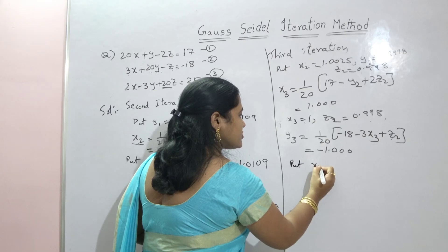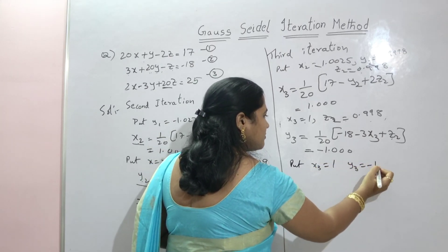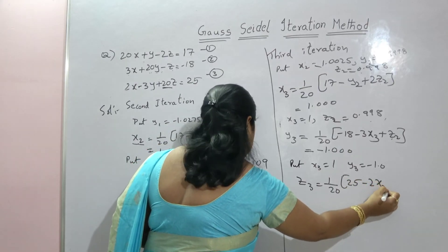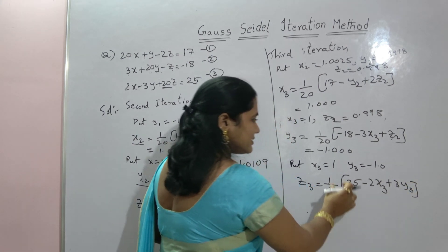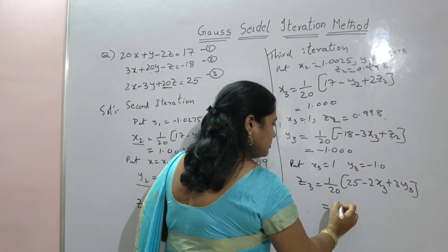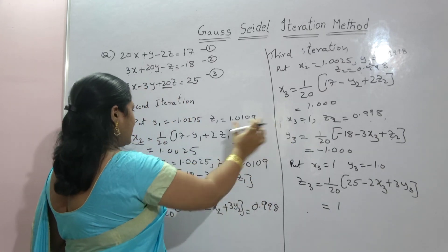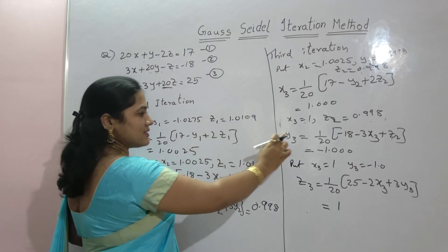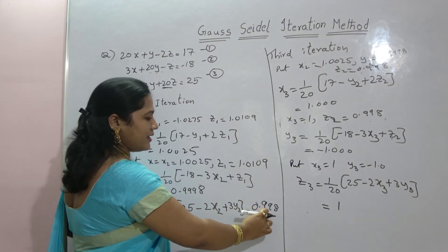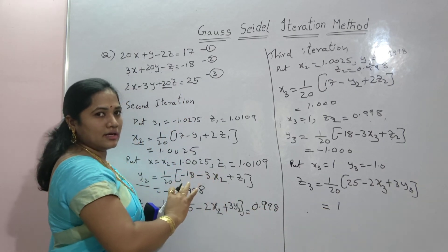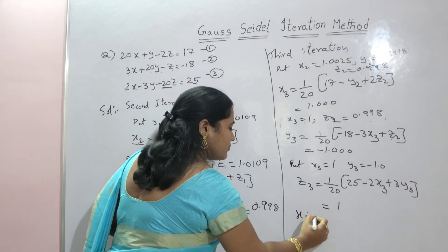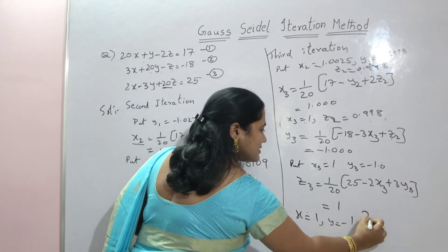For z3, put x3 = 1 and y3 = −1: z3 = (1/20)(25 − 2·x3 + 3·y3) = 1. Comparing iteration 2 and iteration 3: x2 = 1.0025 ≈ x3 = 1, y2 = −0.9998 ≈ y3 = −1, z2 = 0.9998 ≈ z3 = 1. Both sets of values are essentially the same, so we stop the iteration process. Hence, the solution is x = 1, y = −1, z = 1.